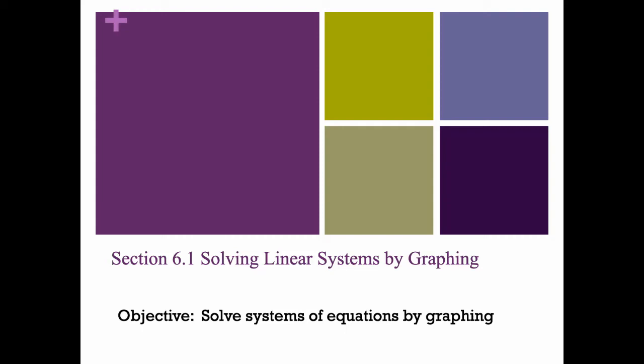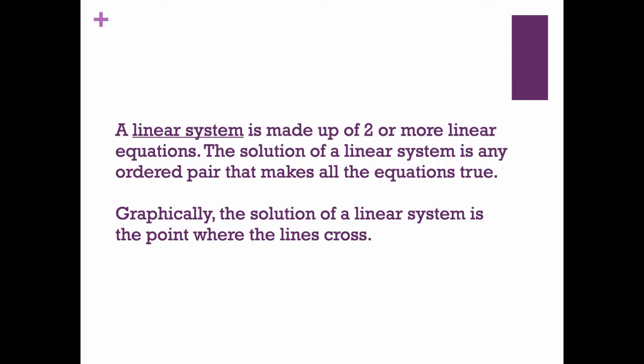Welcome to section 6.1, solving linear systems by graphing. Today we're going to solve systems of equations by graphing. A linear system is made up of two or more linear equations. The solution of a linear system is any ordered pair that makes all the equations true. Graphically, the solution of a linear system is the point where the lines cross — where they touch each other.